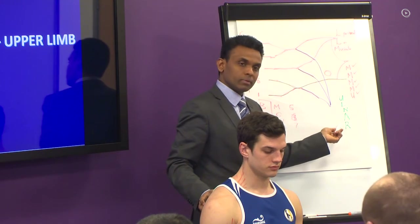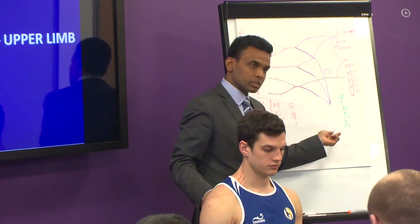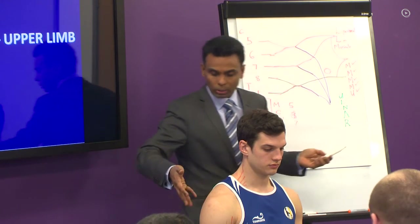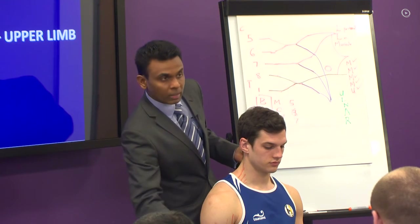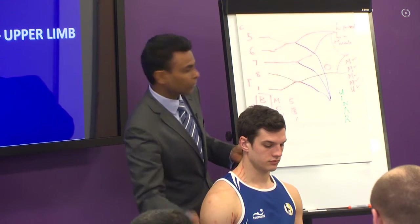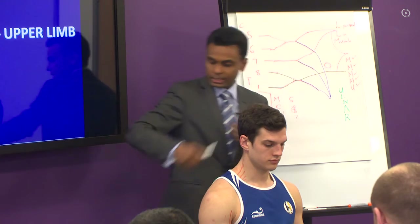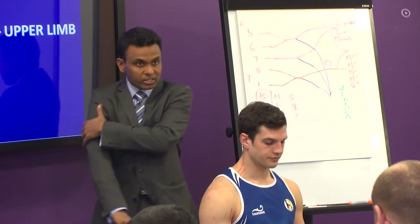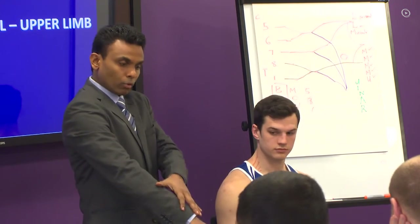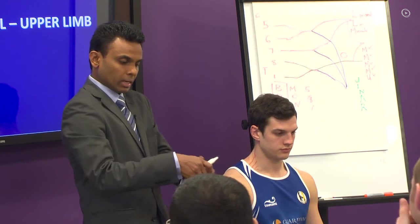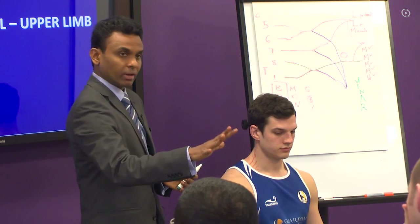The axillary nerve supplies the deltoid. The radial nerve supplies all the muscles on the posterior surface of the arm and the forearm. The radial nerve supplies the entire triceps — all three heads — all the forearm extensors, wrist extensors, and finger extensors. They are all supplied by the radial nerve.